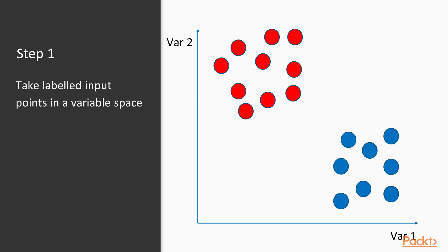So we take a set of input points in a variable space. In this case we have a red group and a blue group. The colour represents the label, and these are in variable 1 and variable 2.